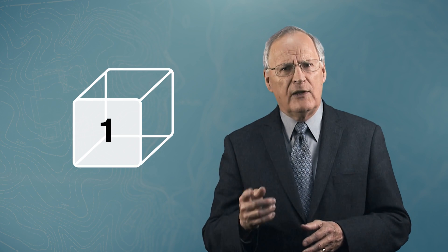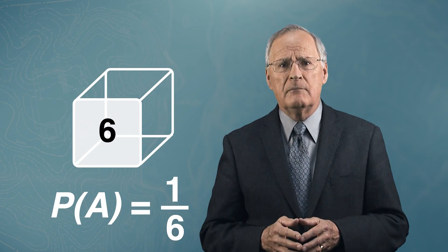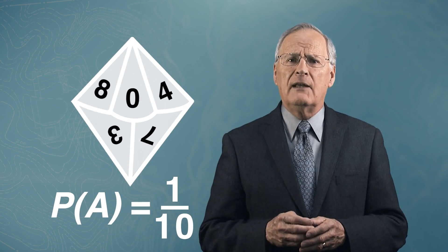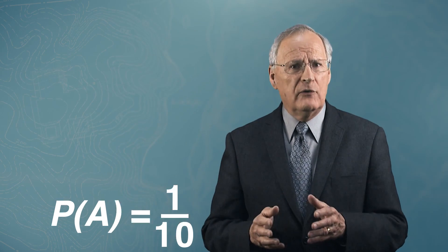Let me give a simple example of probability. If you had a single die, the likelihood of rolling a 1 is 1 out of 6. If you had a 10-sided die, the likelihood of rolling a 1 is 1 out of 10.